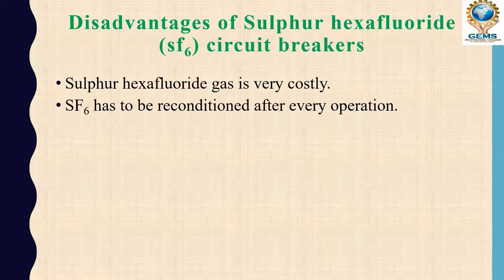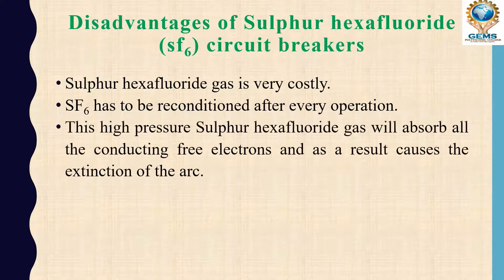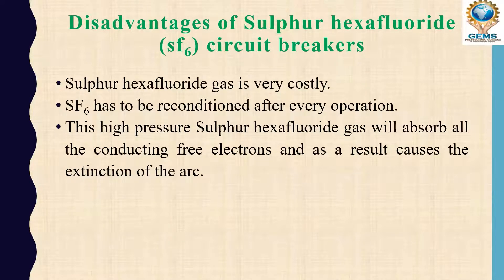When a fault occurs in the system, this SF6 gas quenches the arc by absorbing all the electrons. After that, the gas needs to be reconditioned - it needs to be cleaned and treated - before it can be reused. This is a disadvantage because of the extra process required to remove the absorbed electrons.